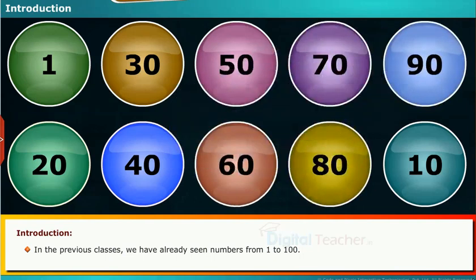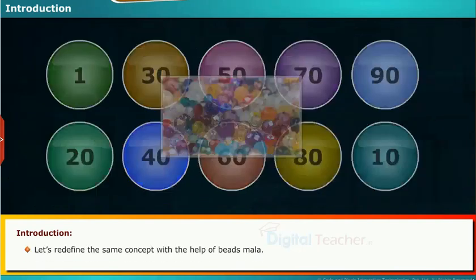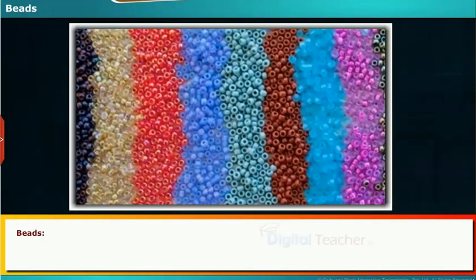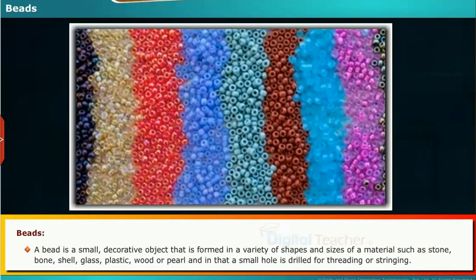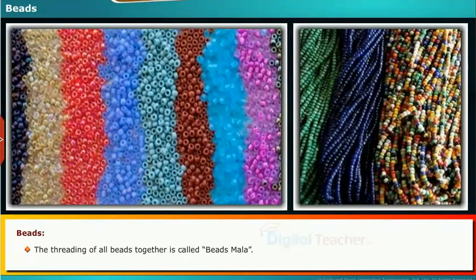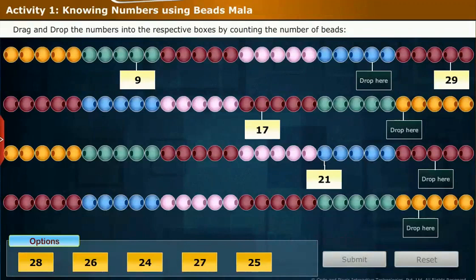Introduction: Let us see the introduction on knowing numbers. In the previous classes we have already seen numbers from one to hundred. Let's redefine the same concept with the help of beads mala. A bead is a small decorative object formed in a variety of shapes and sizes of materials such as stone, bone, shell, glass, plastic, wood or pearl, with a small hole drilled for threading or stringing. The threading of all beads together is called beads mala.